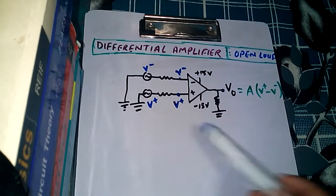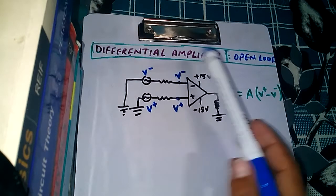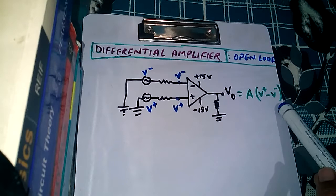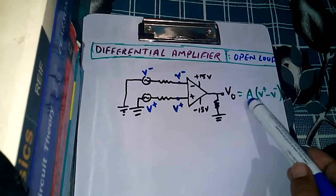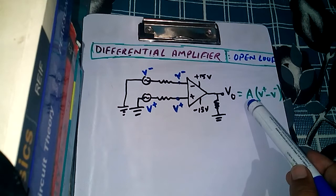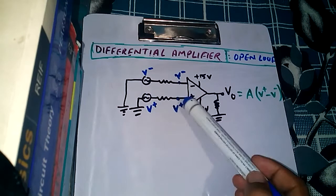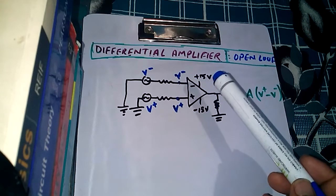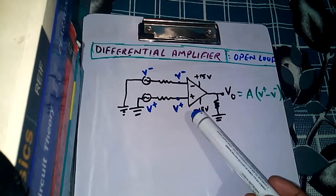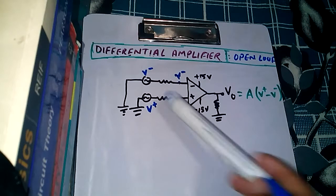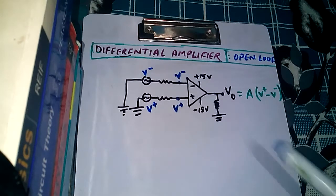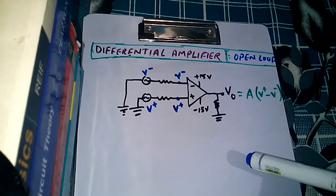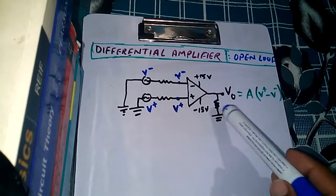Let's start with open loop. Here we have the circuit of a differential amplifier with open loop, because there is no feedback. We know this is the output formula and we will derive it. A is the open loop gain, which is very large. V-plus is the voltage at the positive terminal, V-minus is the voltage at the negative terminal. When we use an operational amplifier to make a differential amplifier circuit, we give two input voltages — both voltages are with respect to ground, and the output voltage is also with respect to ground.